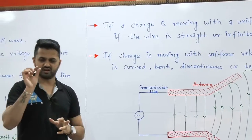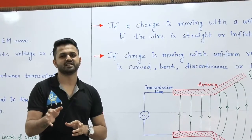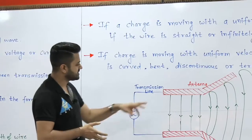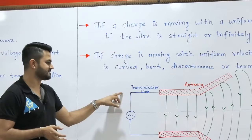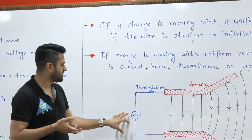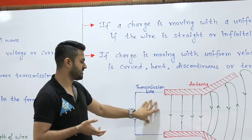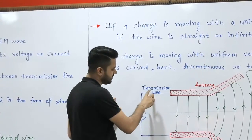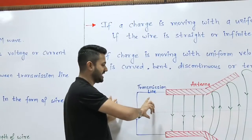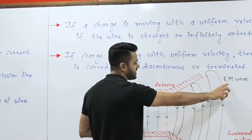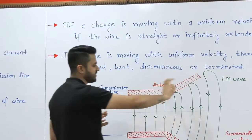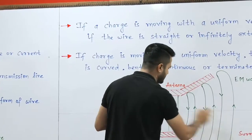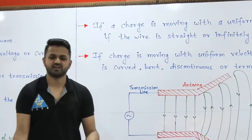Looking at the structure of the antenna: the red line represents the antenna connected with the transmission line. The source provides the excitation, generating a voltage or current wave which is then converted into an electromagnetic wave by the antenna. So the antenna works as a transducer — converting the voltage or current wave traveling through the transmission line into an electromagnetic wave at the output. It is also an impedance matching device, matching the impedance of the transmission line with the surrounding medium, like a quarter-wave transformer between two sections.